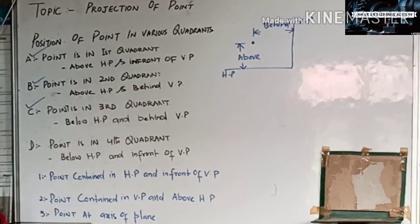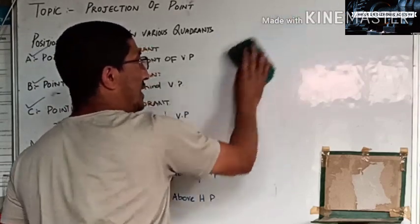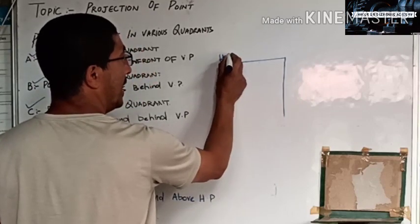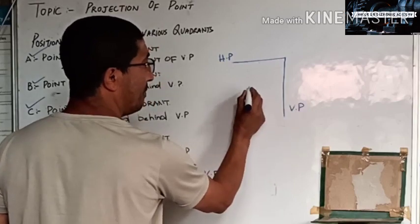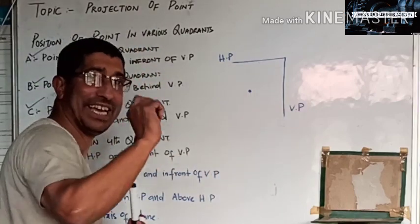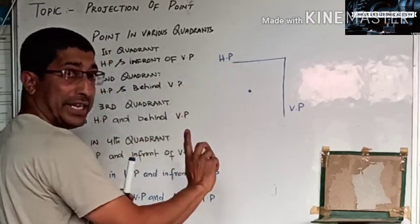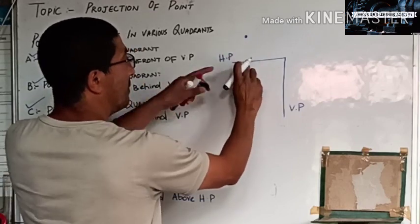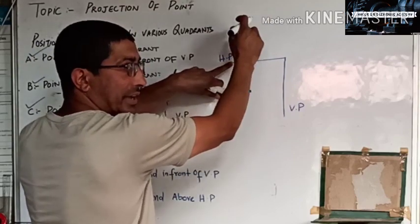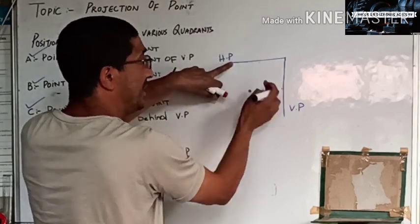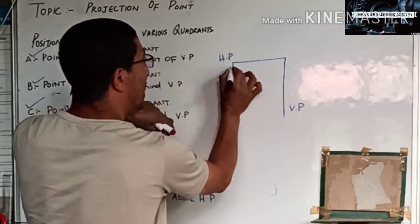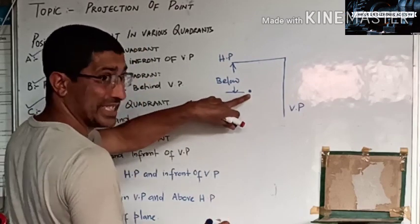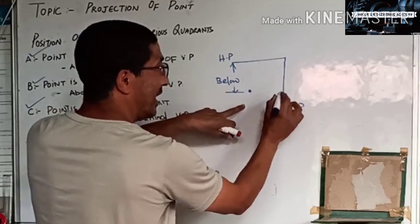Now the third quadrant. The point is below the HP line. Above this HP line is one side, and below is the other — the point is below the HP.